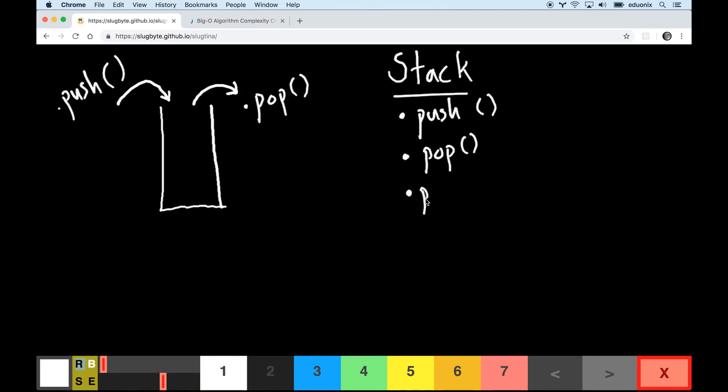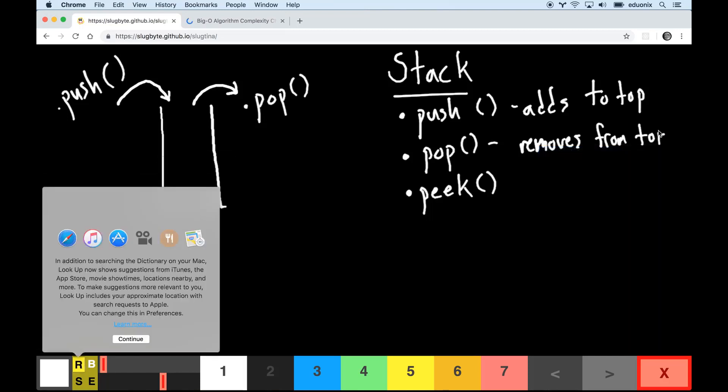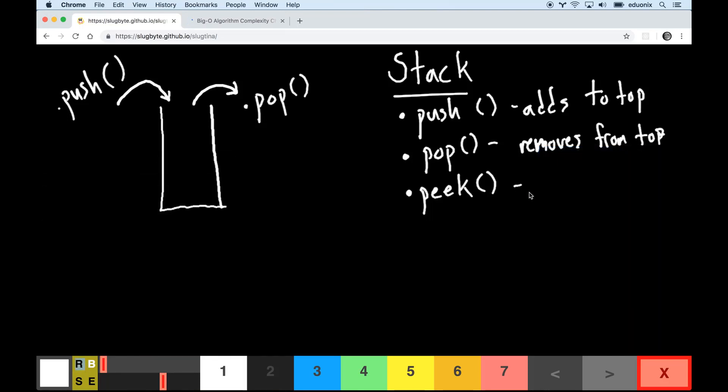Sometimes people say that a stack has something called peek, where you can look at what's on the top of the stack. Pop removes it. Adds to top. I'm gonna say removes from top. The peek method just looks at the top.